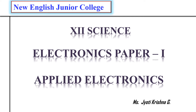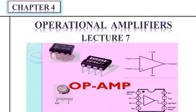Hello students, welcome back to another session of Electronics Paper 1: Applied Electronics. We already started with Chapter 4: Operational Amplifiers. In the last lecture we saw the linear applications of op-amp — non-inverting op-amp, inverting op-amp, buffer, inverter, adder, and subtractor. Today we are going to see the non-linear applications of op-amp.